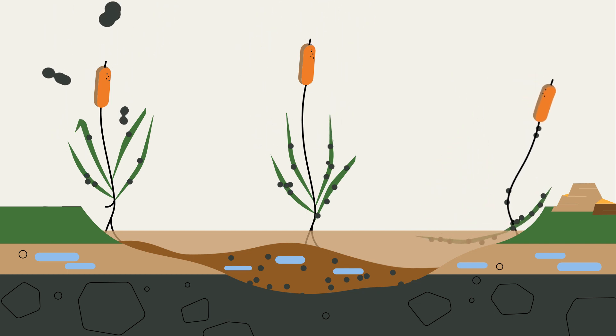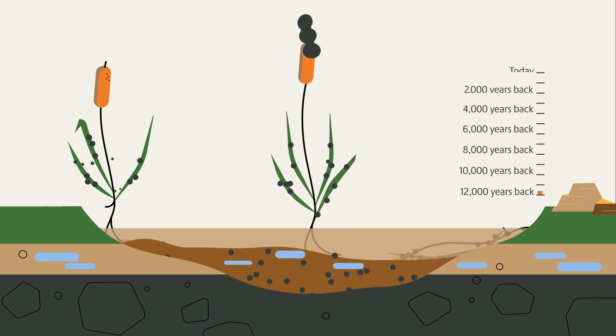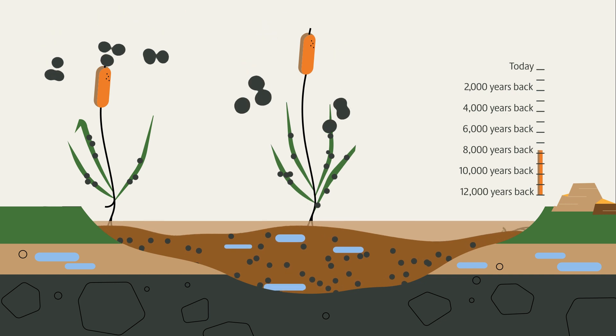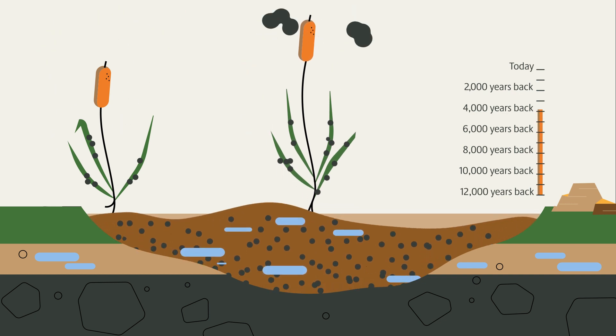Once sunk into the wet peatland, dead plants will not be completely decomposed by microorganisms because there is too little oxygen down there. The carbon-rich plant remains accumulate as peat, or in other words, as huge carbon stores.